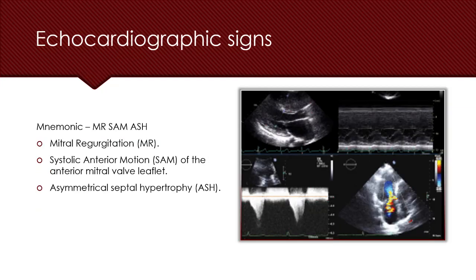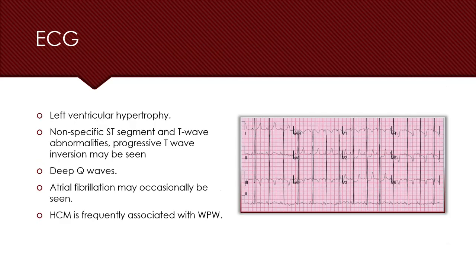Echocardiographically, hypertrophic cardiomyopathy is characterized by mitral regurgitation, systolic anterior motion of the anterior mitral leaflet, and asymmetrical septal hypertrophy. On ECG, hypertrophic cardiomyopathy is manifest by LVH criteria, deep T wave inversions, and deep pathological Q waves. Occasionally, it is associated with atrial fibrillation or WPW syndrome.